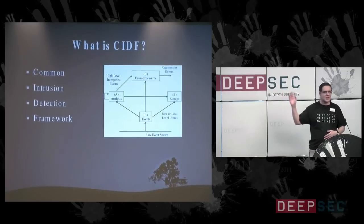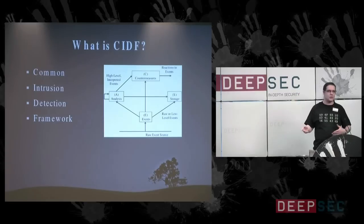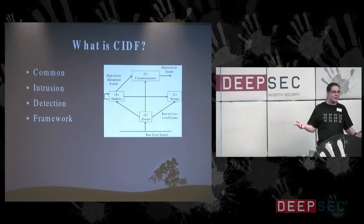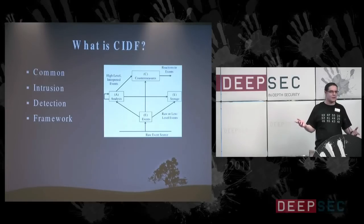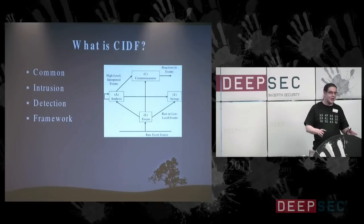We have a countermeasures box, which is really interesting in IDS terms, because we presume — and rightly so — that an IDS is a passive part of a network. But they do have a countermeasures box, which is that annoying email that the system algorithm generates for every false positive that ever happens. That's the countermeasures box doing that, and we can have a lot of fun with that.